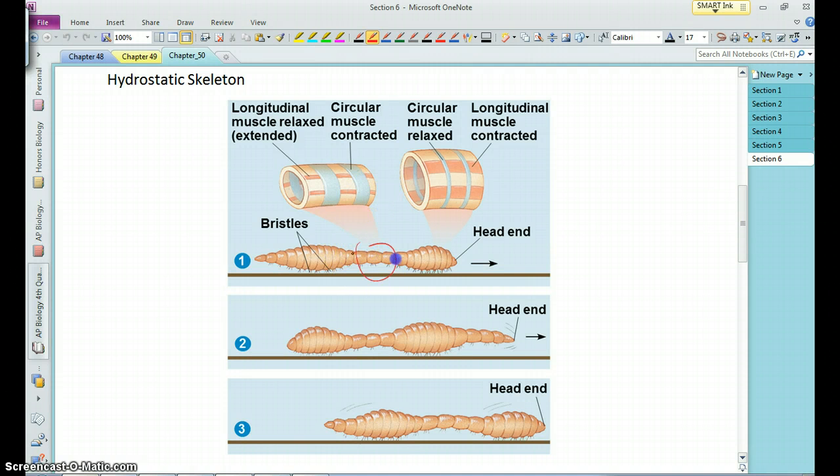And so here in the middle, this earthworm is contracting those muscles, which causes a narrowing of that portion and squeezes the liquid out to the side, and they can use this wave of these contractions to move the organism along through space.